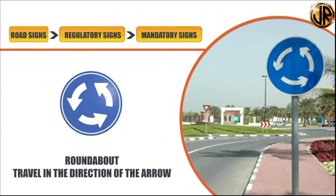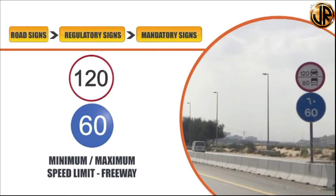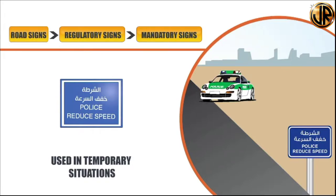The roundabout sign indicates a circular intersection and is posted close to roundabouts; the arrow indicates vehicles must travel in an anti-clockwise direction. The 'tram only' sign indicates that the road or portion of road is set aside for trams only — no other class of road user shall use it. The minimum speed limit sign on the freeway depicts a minimum of 60 km/h where the maximum speed is 120 km/h. Driving below the speed limit without reason can disturb other motorists and incur a fine. The 'police reduce speed' sign is seen in temporary situations at check posts where police are running a routine check; drivers must slow down and follow police instructions.